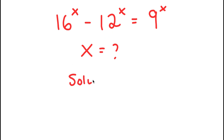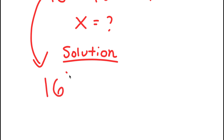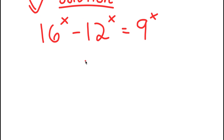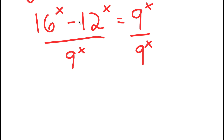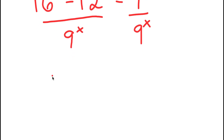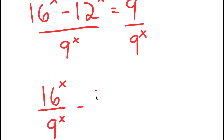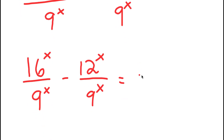For my solution, I'm going to first start by rewriting my equation over here so I have more space. So I have 16 to the power of x minus 12 to the power of x is equal to 9 to the power of x. What I'm going to do is divide both sides by 9 to the power of x. So 16 to the power of x minus 12 to the power of x, all over 9 to the power of x, is the same thing as 16^x over 9^x minus 12^x over 9^x, and this is equal to 9^x over 9^x, which is 1.